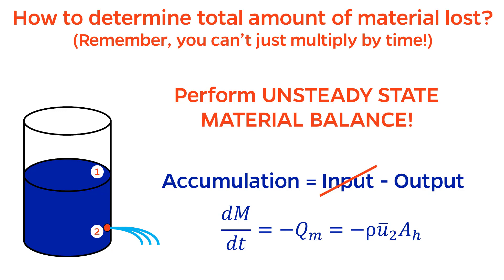The accumulation is the time derivative of mass, and the output is minus Qm, the mass flow rate. It's good practice to plug in the expression for Qm, so we don't accidentally treat it as a constant. Remember that mass flow rate is density times volumetric flow rate, and volumetric flow rate is velocity times the area of the hole.